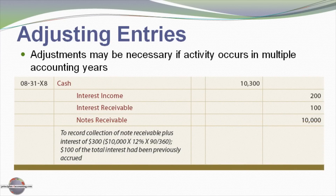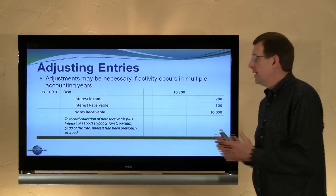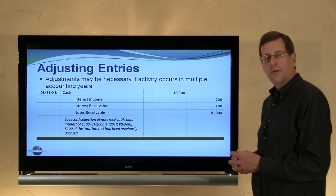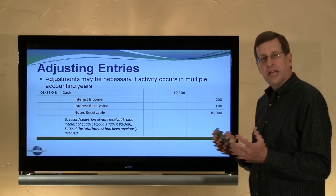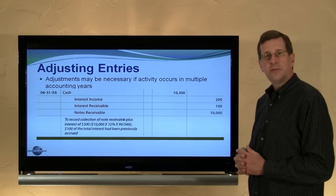When payment actually occurs on August 31, we debit cash $10,300, recording the collection of the $10,000 note, the $100 of interest receivable, and the other $200 as interest income for the months of July and August. This final collection entry closes our consideration of the material in this particular chapter.